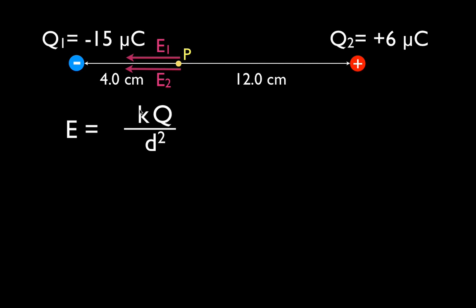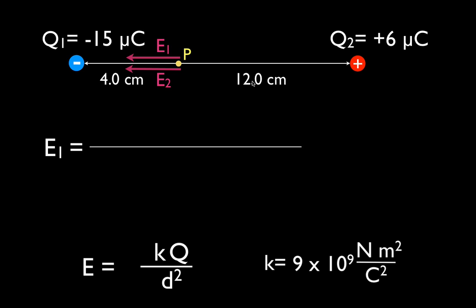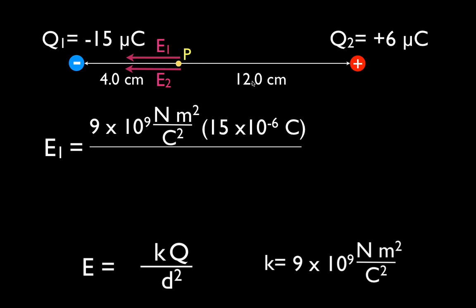The electric field equals K — Coulomb's constant — times the magnitude of the charge, divided by the square of the distance away from the charge. Point P is separated from Q1 by 4 centimeters, and from Q2 by 12 centimeters. Now we're going to plug our numbers in. E1, the electric field from charge 1, is 9×10⁹ N·m²/C² times the charge divided by the square of the distance.